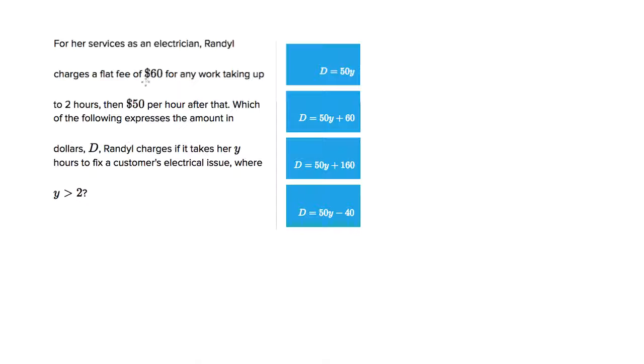So really you just need to match up that she's charging $60 for work up to two hours and then $50 per hour after that. So it's not $60 per hour up to two hours, it's $60 flat fee. Flat means like a constant.